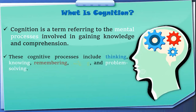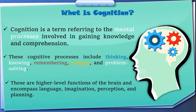These cognitive processes include thinking, knowing, remembering, judging, and problem solving. In language, cognition refers to the mental process of thinking about how to think and what we are going to do. These are higher-level functions of the brain and encompass language, imagination, perception, and planning.